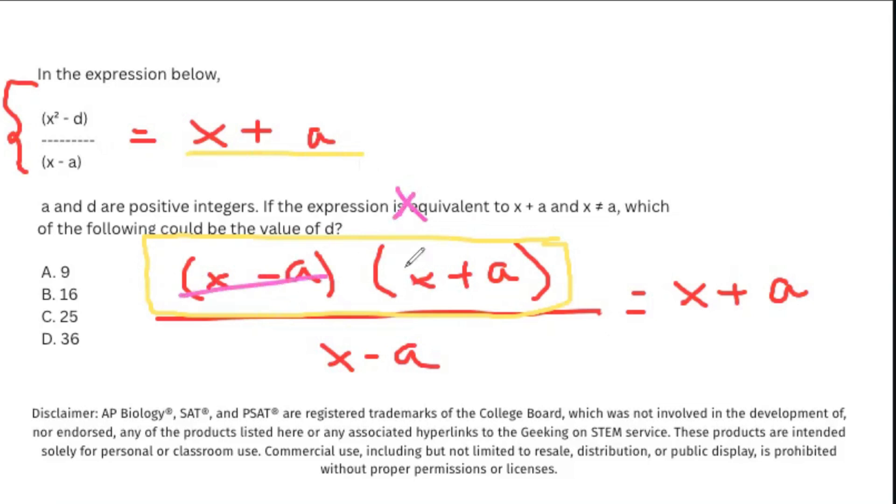You should know this because you would have the identities memorized that are common for a type of problem like this. Now that we know this whole expression, x squared minus a squared divided by x minus a equals x plus a.